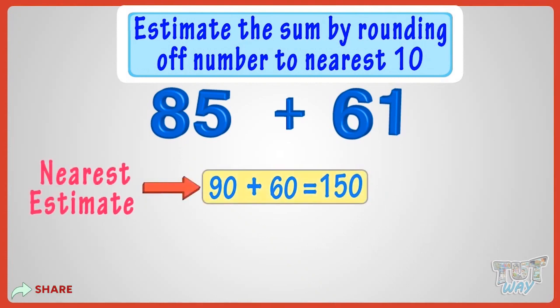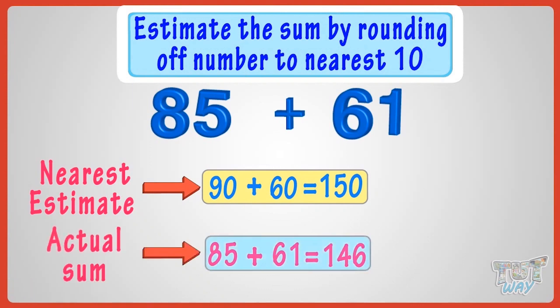Now, let's compare the estimate with the actual answer. 85 plus 61 equals 146. So, your estimate is very near.